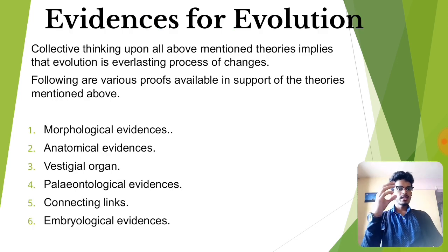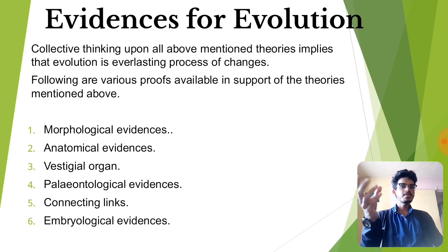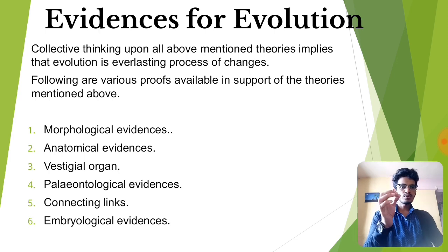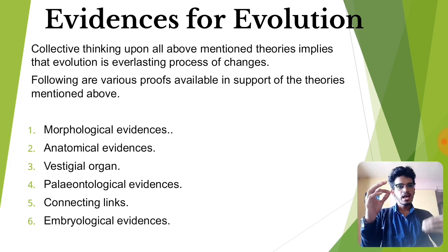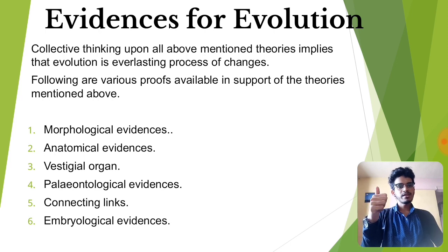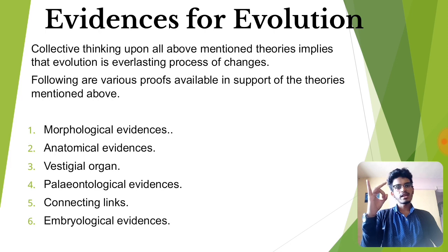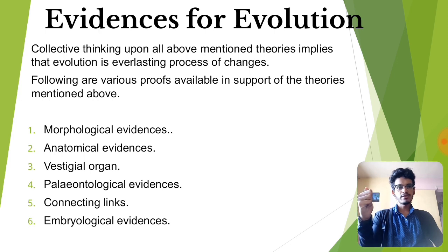Now we have evidences of evolution. To prove evolution, you require evidences — evidence is nothing but proof. There are six evidences which explain the theory: first, morphological evidences; second, anatomical evidences; third, vestigial organs; fourth, paleontological evidences; fifth, connecting links; and sixth, embryological evidences. We will be learning more about each of them in detail.